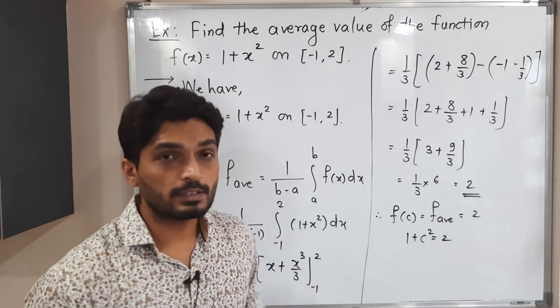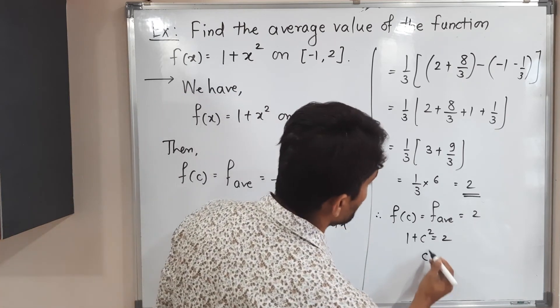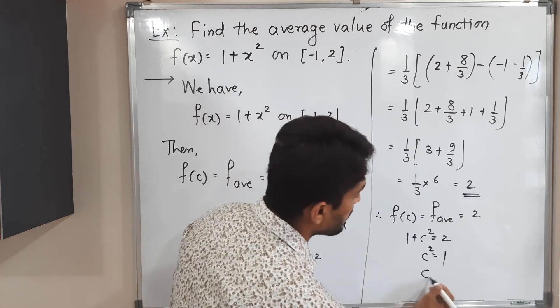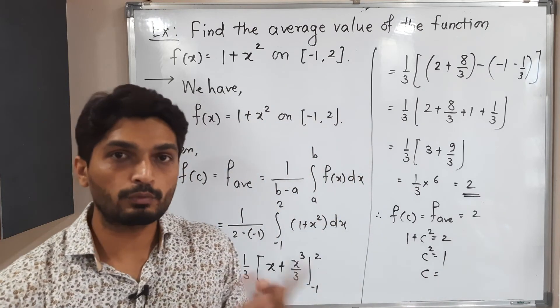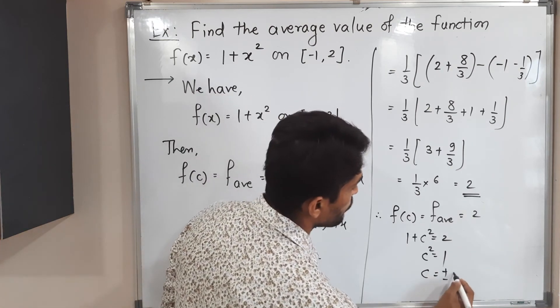We want a value of c. So I will shift 1 on that side. So c square is equal to 2 minus 1, which is 1. So c is equal to, let us take square root of both sides. Square root will be both plus and minus. Therefore c equals plus minus 1.